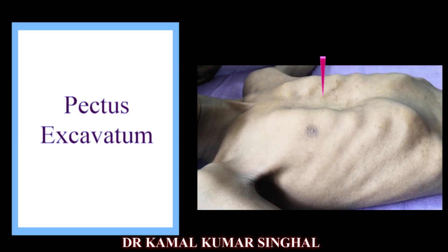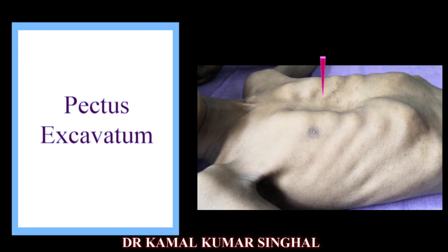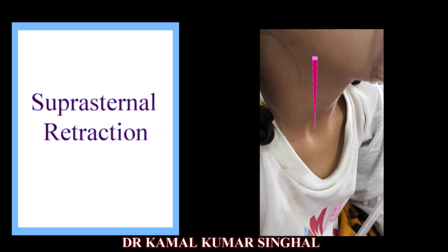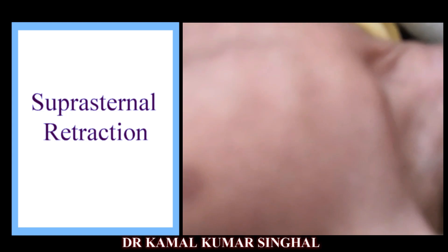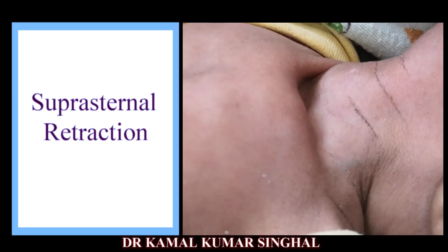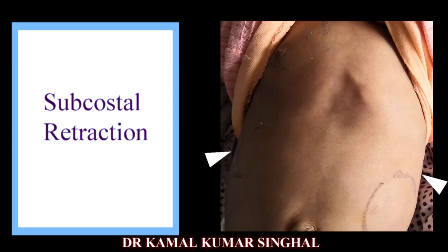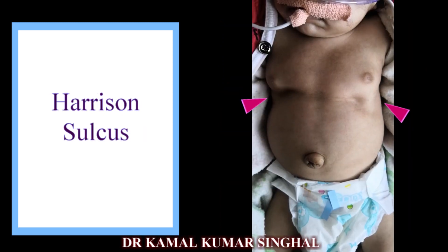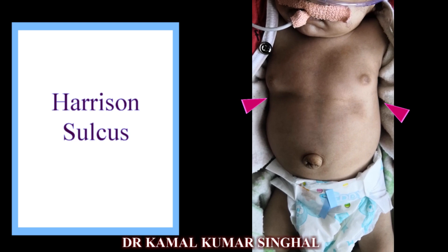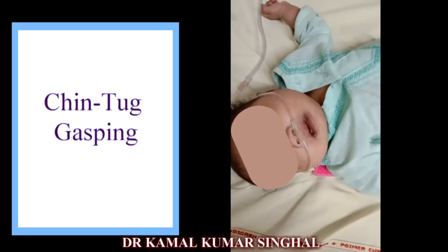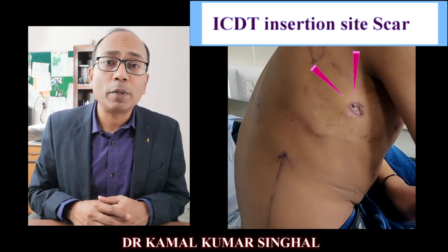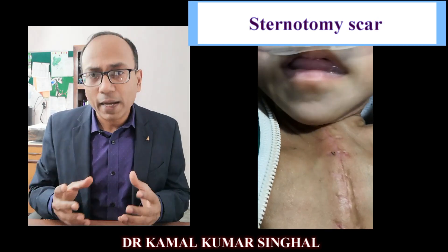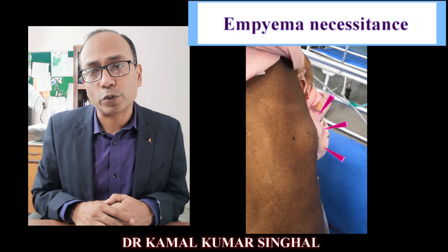During exams, usually an effort is made to assign a relatively cooperative child to the candidate. This is unlike the practical scenario where the child is either critically sick or is comfortable only in a particular position. Additionally, one may look for any scars or lumps. These scars may indicate previous procedures like thoracotomies, chest tube insertions, any lung biopsies, or even tracheostomy tube placements.